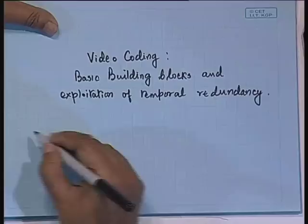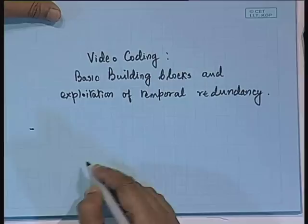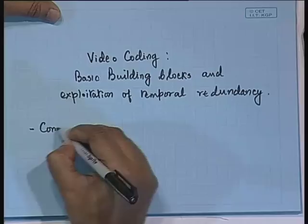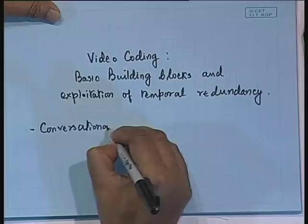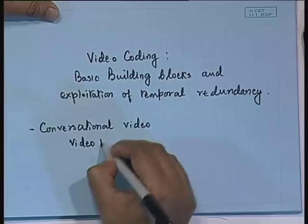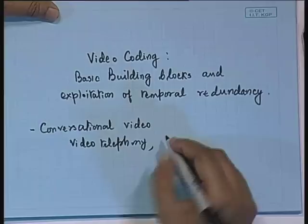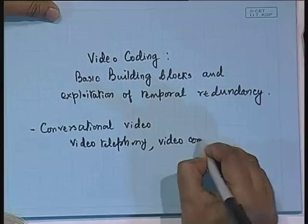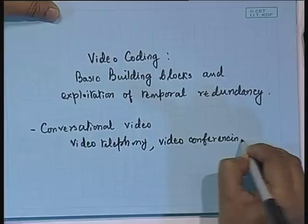What are the different applications? The applications of video communications can be broadly categorized into two major areas. One is what is called conversational video. Under this conversational video category we have video telephony and video conferencing, which could be through wired or wireless medium.